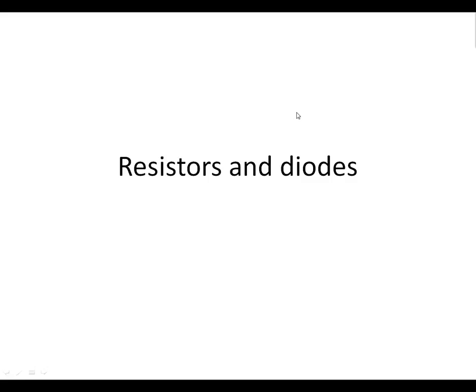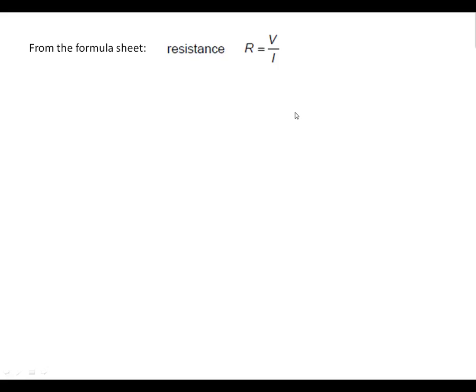Resistors and diodes. We're going to talk about calculations to do with resistors and diodes. From the formula sheet, this is a formula that we'd use: R equals V over I.